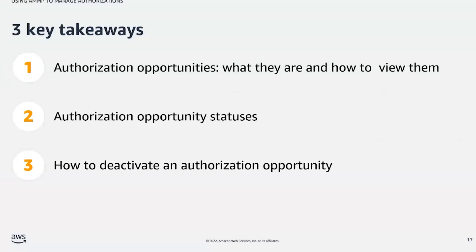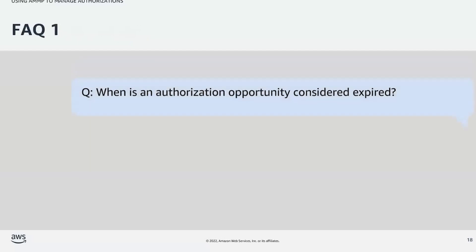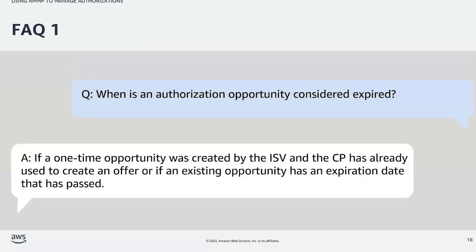Let's answer some FAQs about authorization. Question number one: When is an authorization opportunity considered expired? An opportunity is considered expired if a one-time opportunity was created by the ISV and the consulting partner has already used it to create an offer, or if an existing opportunity has an expiration date that has passed.